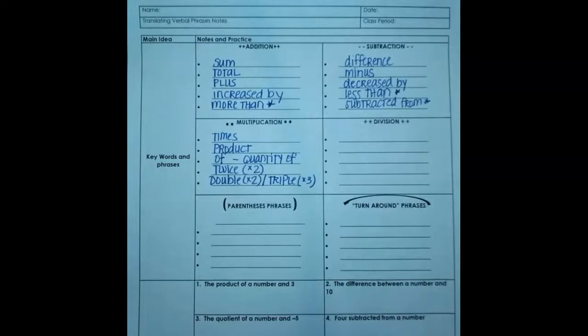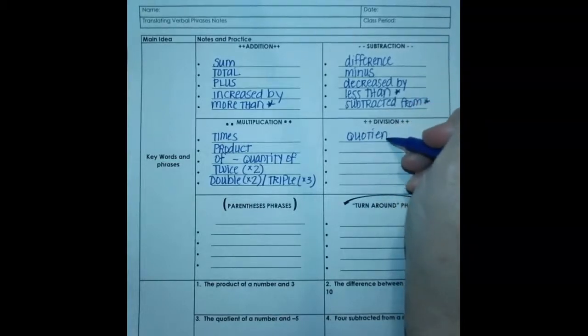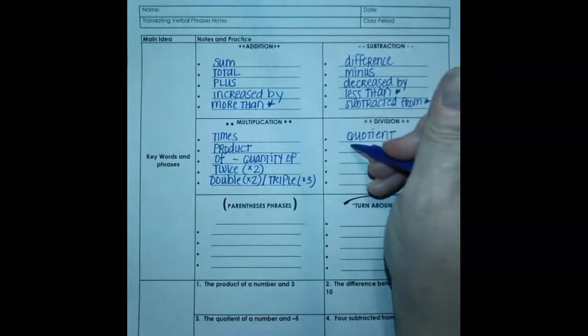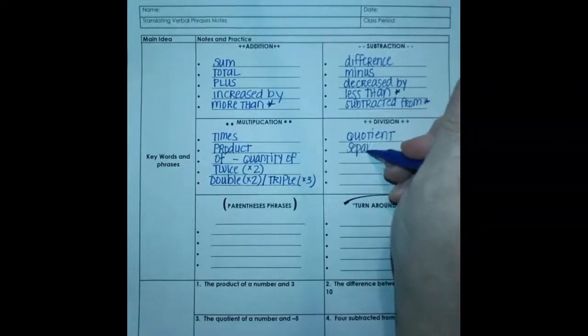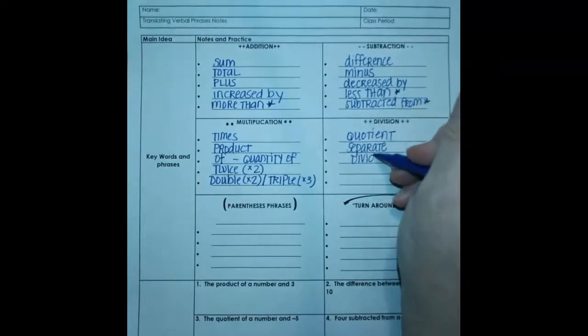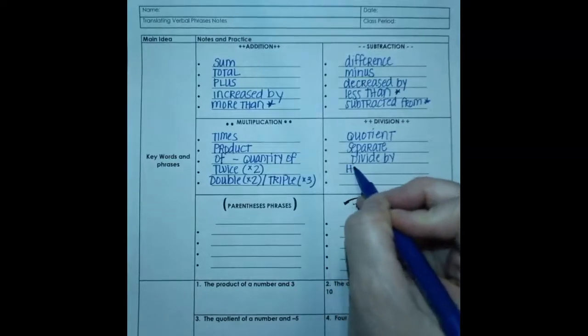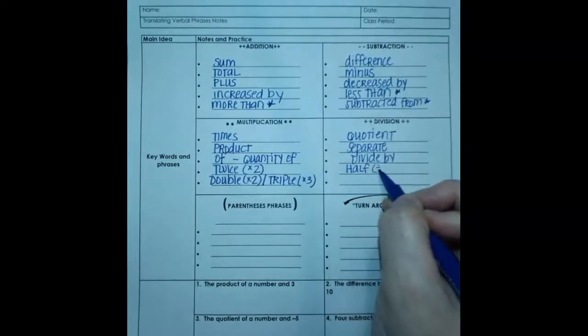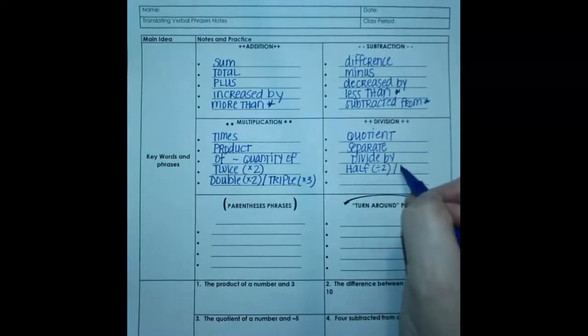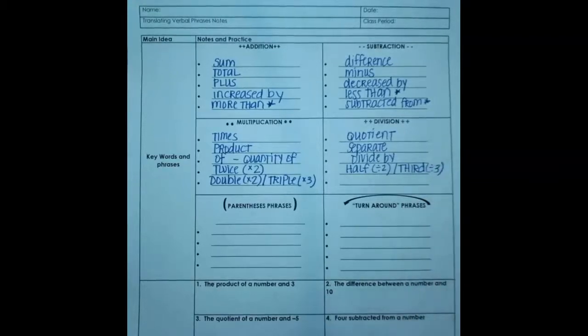The opposite of multiplication is division. Let's look at some of the division words we can very likely run into. We could expect to see the word quotient, separate, divide by, then something you'll see quite often is the word half. Half means you're going to divide by two. Or you could even see the word third, which means divide by three. So those are the main groups of operations you're going to see. Addition, subtraction, multiplication, and division.